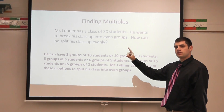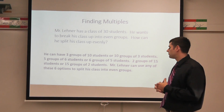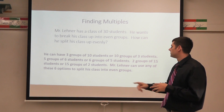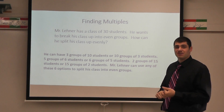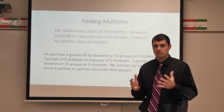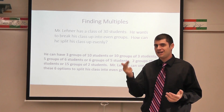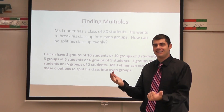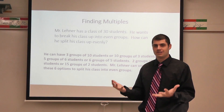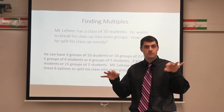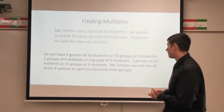Or I can flip it. There are multiples of three — I'm going to use my fingers. 3, 6, 9, 12, 15, 18, 21, 24, 27, and 30. So I can have 10 groups of three students in each group. That's two ways I can break up the grouping so far.